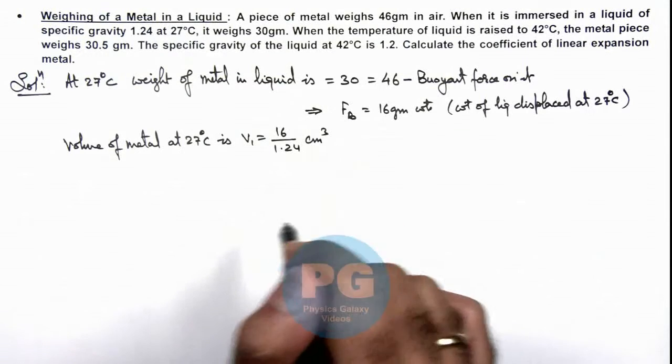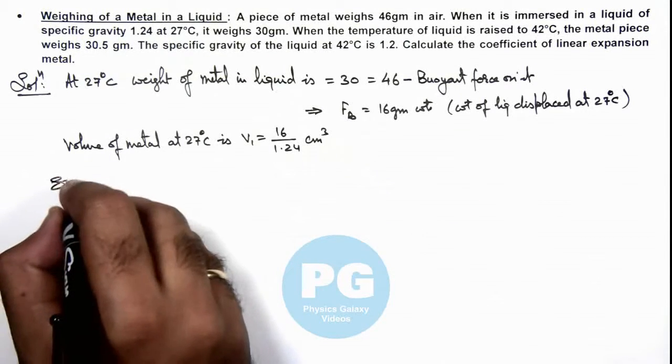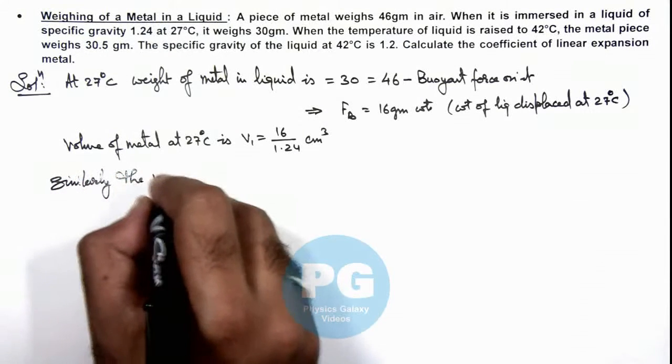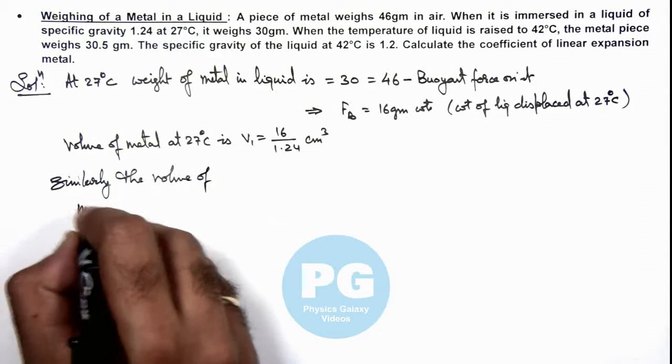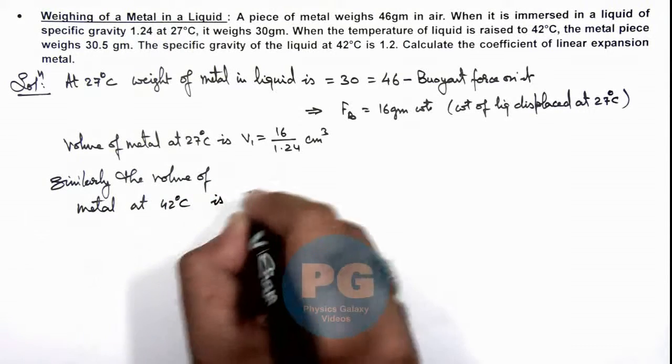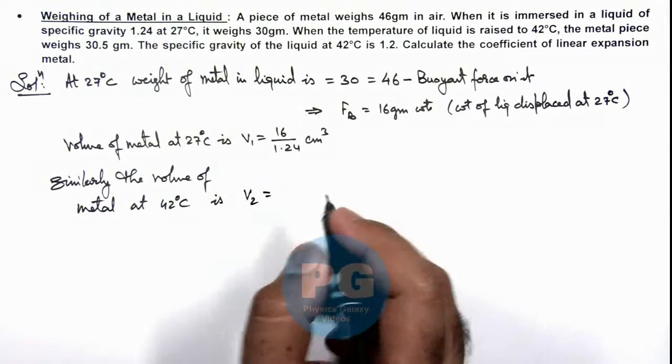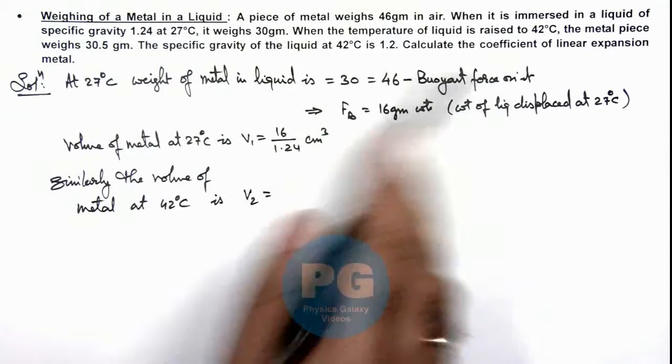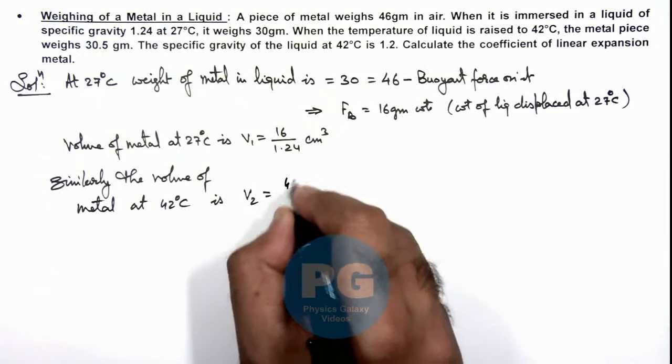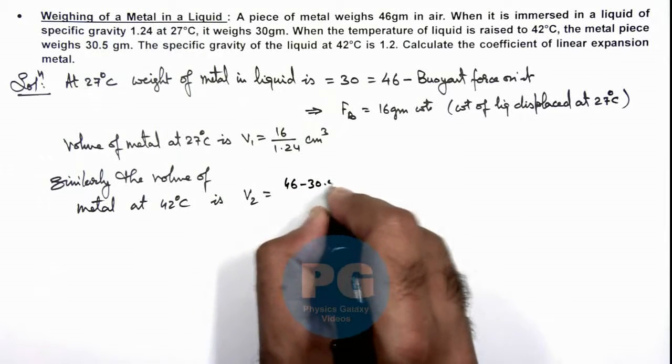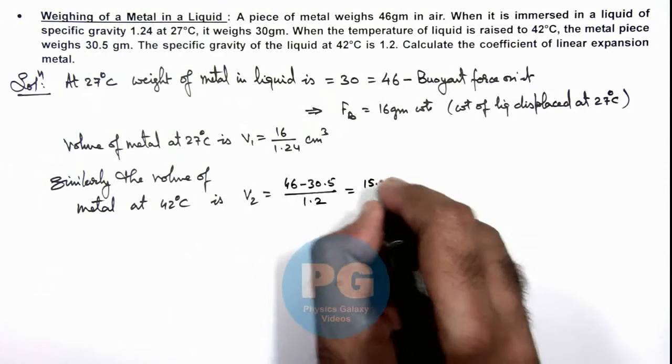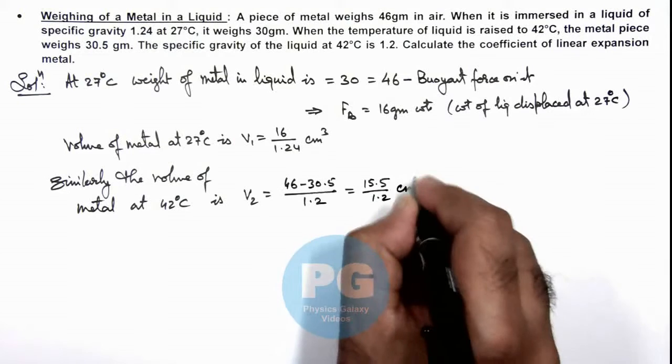Similarly, we can calculate the volume of metal at 42 degrees Celsius. This V2 we can write as: at 42 degrees Celsius the effective weight is 30.5 grams, so we can write it as 46 minus 30.5 divided by 1.2, which is 15.5 divided by 1.2 centimeter cube.